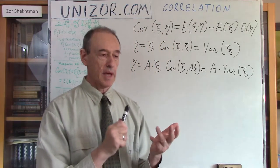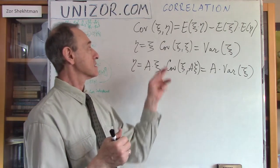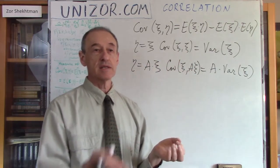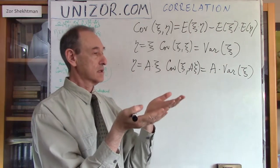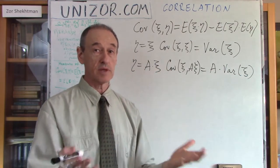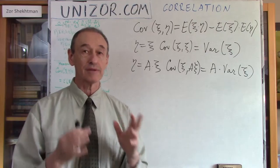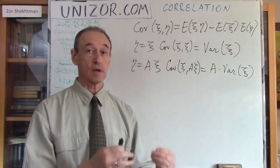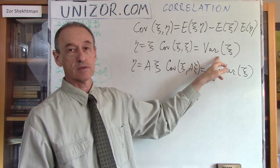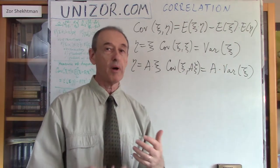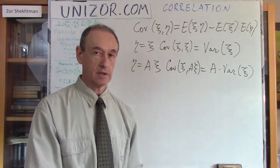So what do we have right now? Covariance of two independent variables is zero. Covariance of a random variable with itself is equal to some positive constant — the variance. And covariance with minus itself is the negative of that constant with the same absolute value. If the relationship is not that rigid — there is a relationship but not as tight as these two cases — then the covariance should be slightly less, but positive if they go up synchronously and negative if they go in opposite directions.